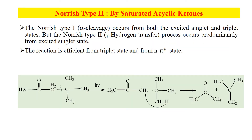Here is another example. This is the alpha carbon and this carbon is beta. When this bond is broken with the help of light, two radicals are formed — both are alkyl radicals. In the next step, this hydrogen along with its one electron is shifted to the CH2 and it is converted into the keto form, and the remaining alkyl group is converted into alkene.